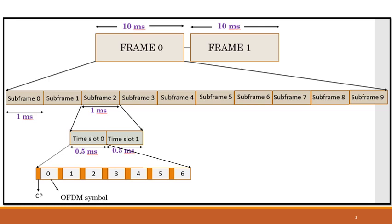The largest unit in a frame structure is called a frame. Each frame will be of 10 milliseconds. This 10 millisecond frame can again be divided — a frame of 10 milliseconds is divided into subframes, totally 10 subframes, each subframe of 1 millisecond. Again, this 1 millisecond subframe can be divided into time slots: 1 millisecond subframe is divided into 2 time slots, each time slot of 0.5 milliseconds.